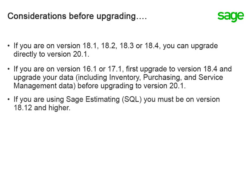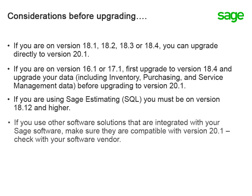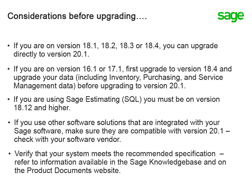If you are using Sage Estimating, you must be on version 18.12 and higher. If you use other software solutions that are integrated with your Sage software, make sure to check with your software vendor to verify they are compatible with version 20.1. Also verify that your system meets the recommended specifications, available in the Sage Knowledge Base and on the Product Documents website.